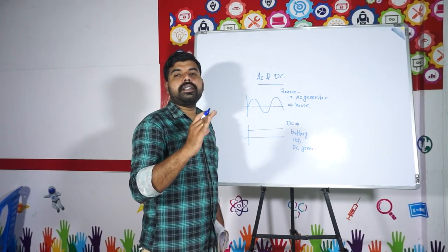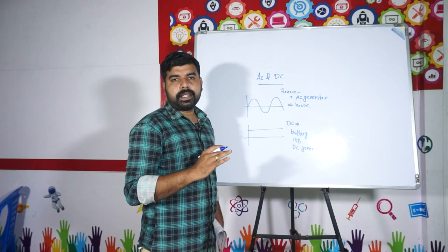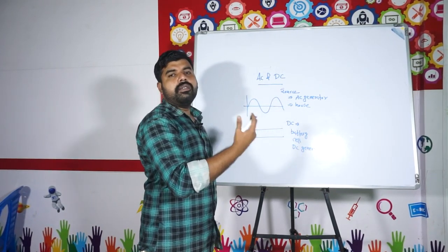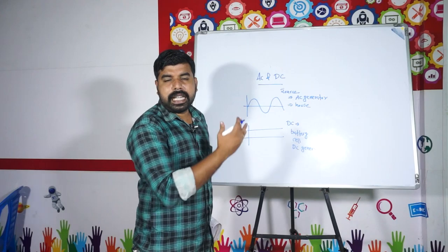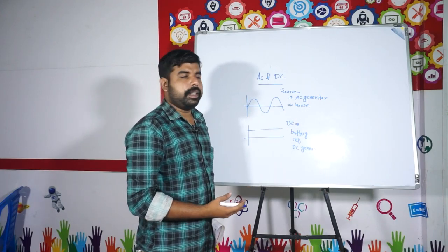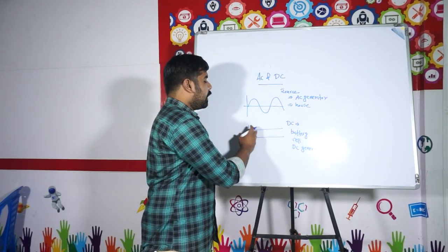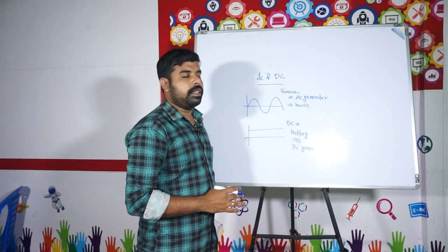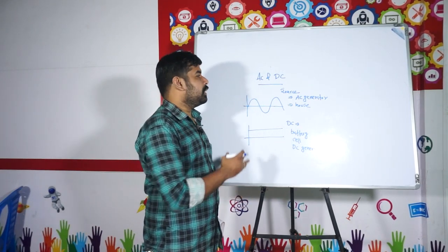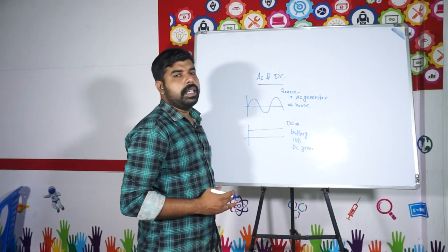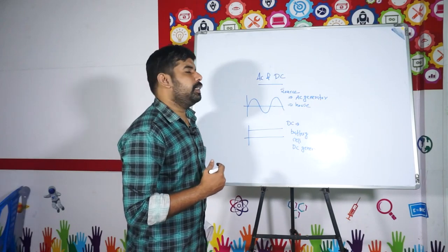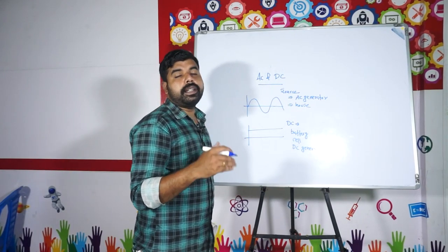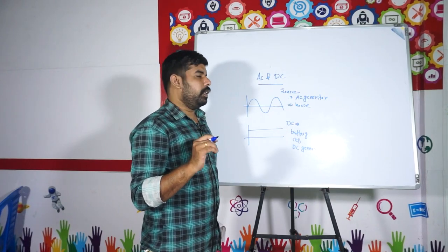So, what is AC? Alternating current is the current which varies with time. And the current which does not vary with time is known as DC current. This is the difference between AC current and DC current.